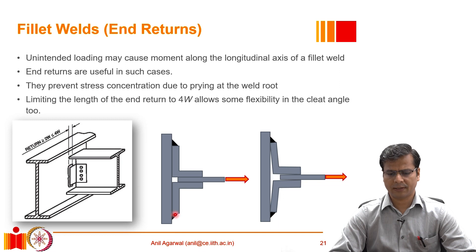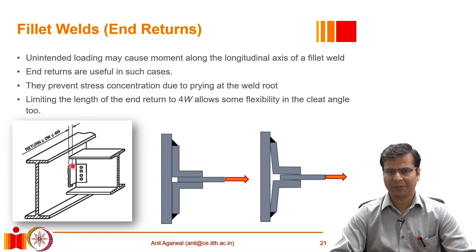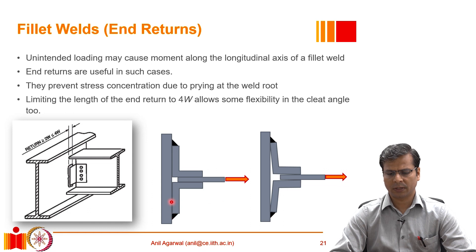Why not weld the entire width of the angle at the top? Because we also want this connection to continue to behave like a simple connection. Welding the entire width of the angle would effectively restrain movement completely and introduce areas of sharp stress concentration. Therefore, we weld only up to 4 times the weld size and stop there, so that the rest of the angle remains free to deform and produce some level of flexibility in the connection.